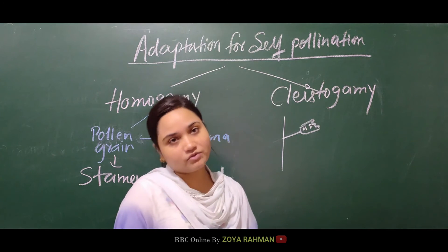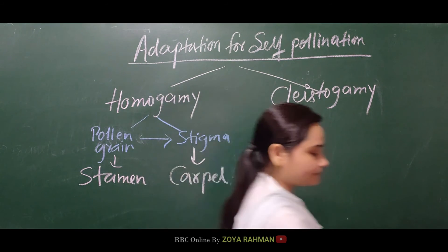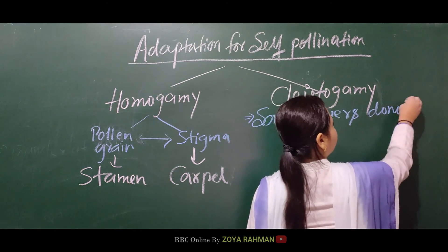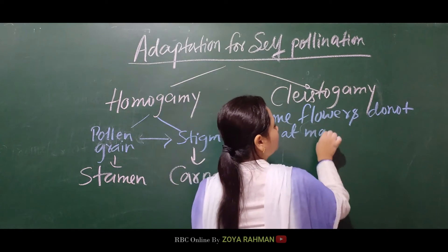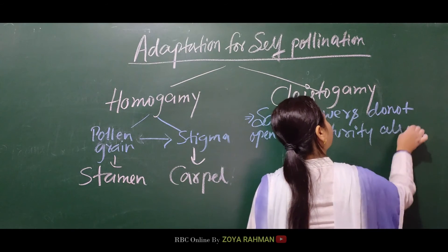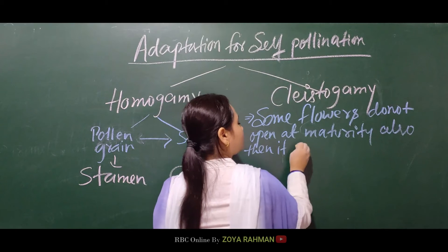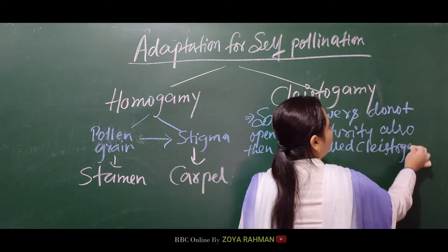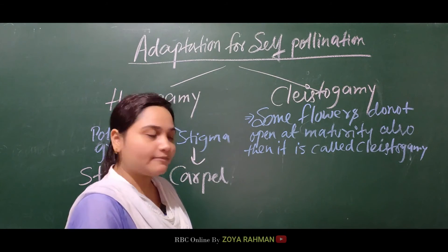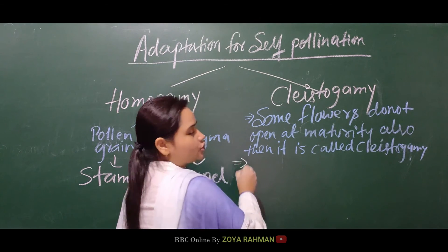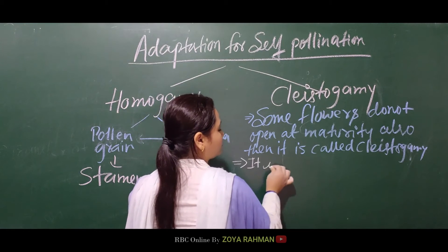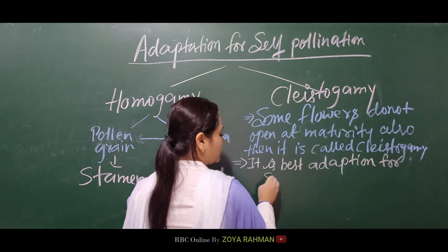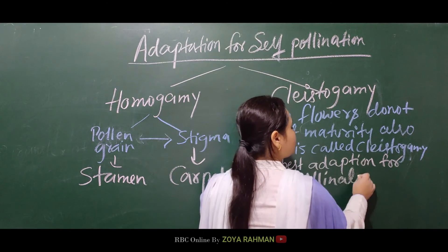The definition of cleistogamy: some flowers do not open, even at maturity. They remain closed after maturity. Such flowers are called cleistogamous flowers. Cleistogamy is a very big adaptation for self-pollination — in fact, it is the best adaptation, since male and female parts are enclosed within the closed flower, making only self-pollination possible.